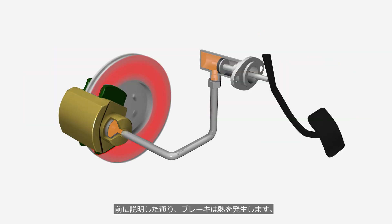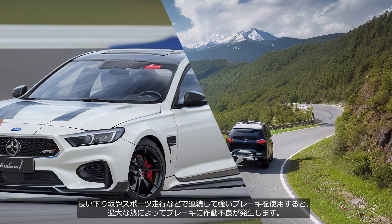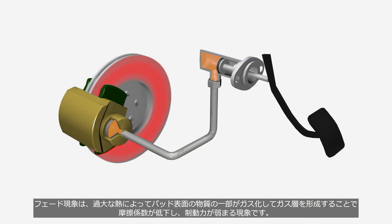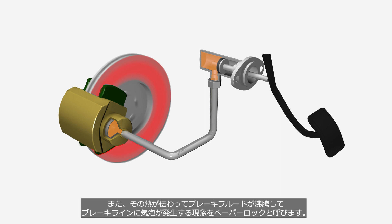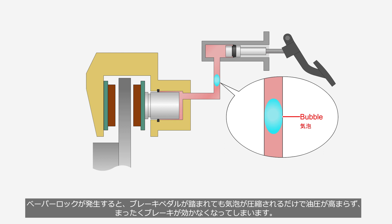Brakes generate heat. When braking is continuously applied, such as on long downhills or during sport driving, excessive heat can cause brake malfunction. Brake fade is a phenomenon where excessive heat causes some of the material on the pad surface to vaporize, forming a gas layer, which reduces the coefficient of friction and weakens the braking force. Moreover, when the heat is transmitted and the brake fluid boils, causing bubbles to form in the brake lines, it is called vapor lock. When vapor lock occurs, pressing the brake pedal only compresses the air bubble without increasing hydraulic pressure, resulting in a complete loss of braking effectiveness.